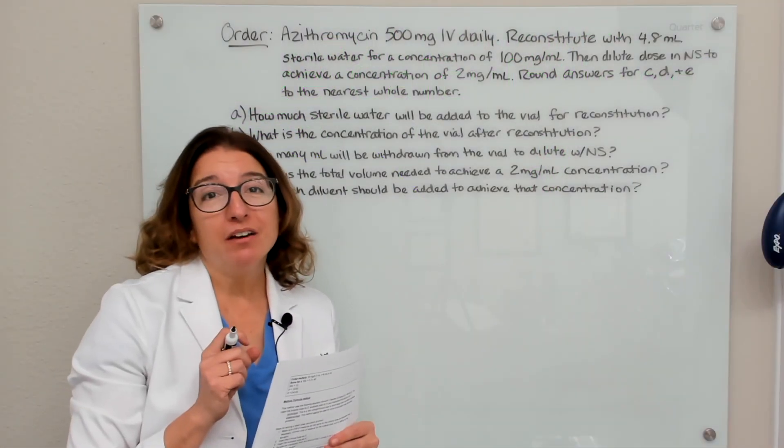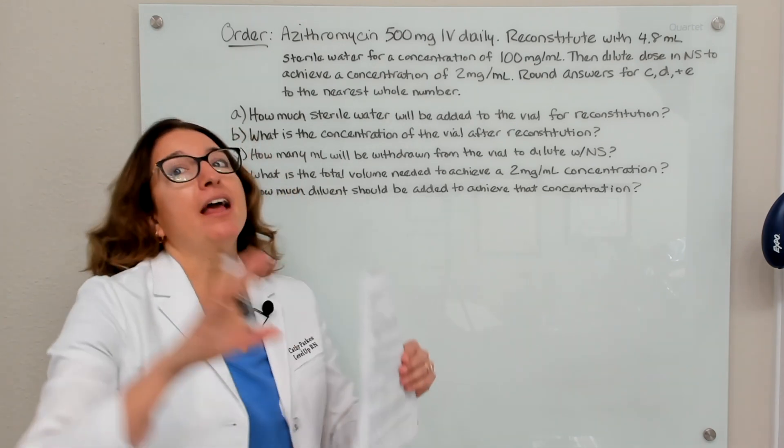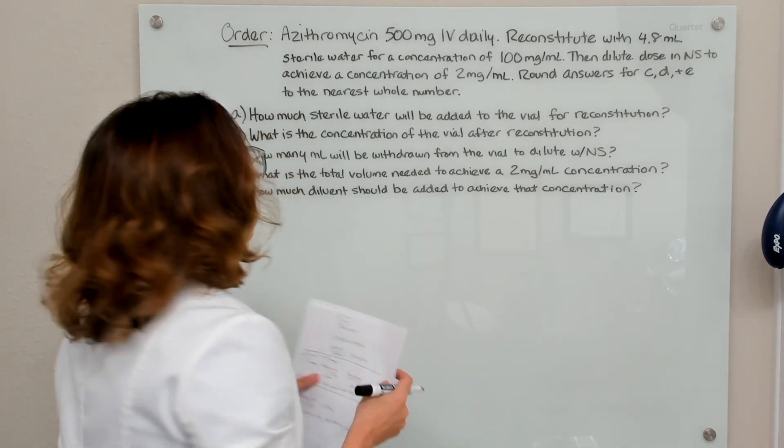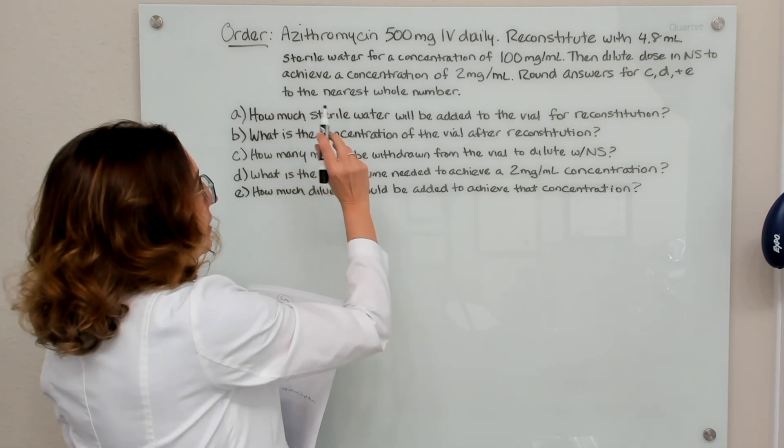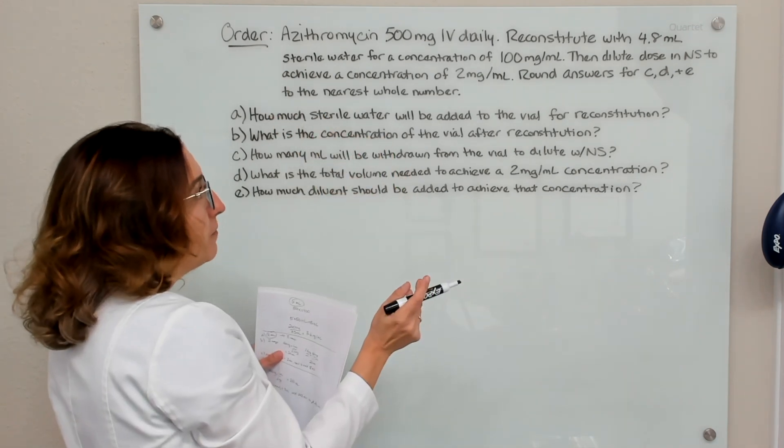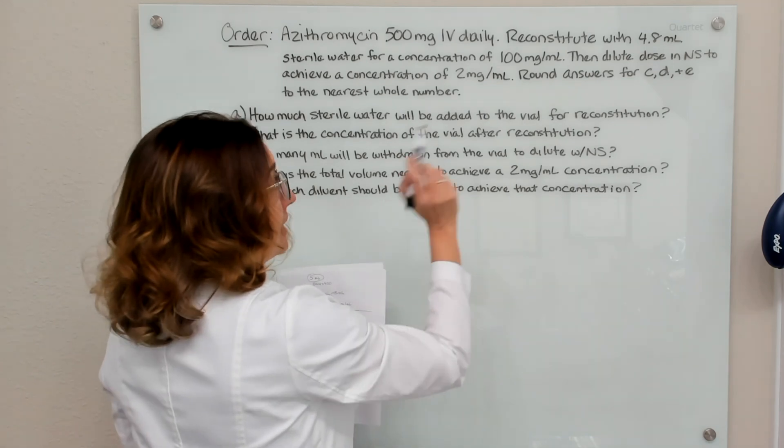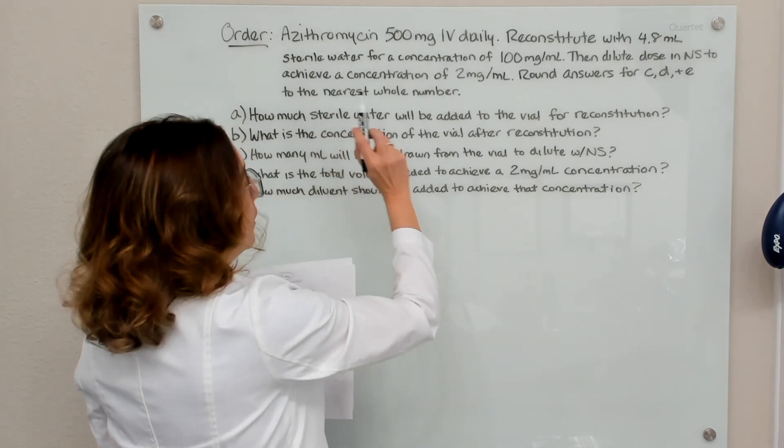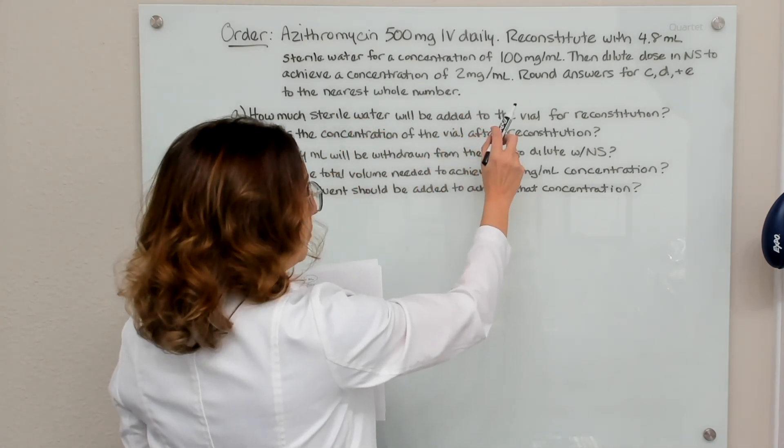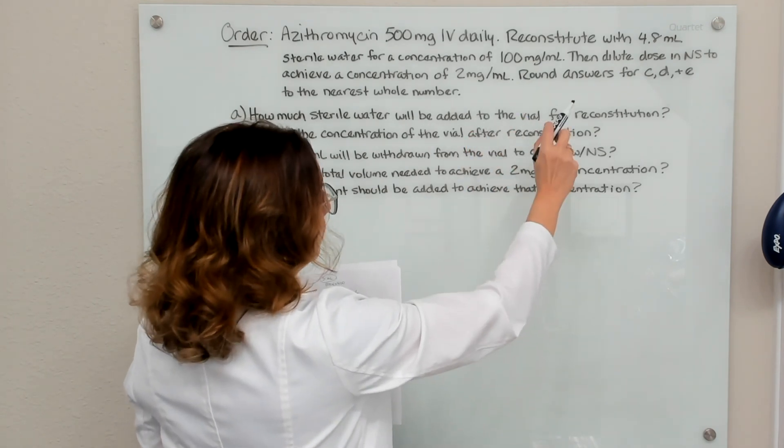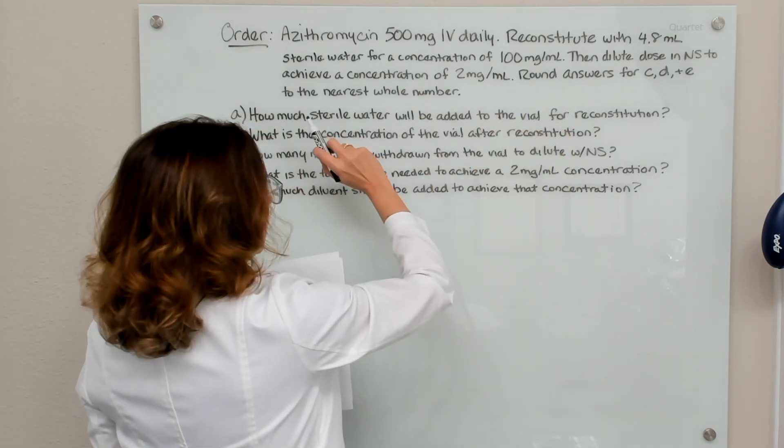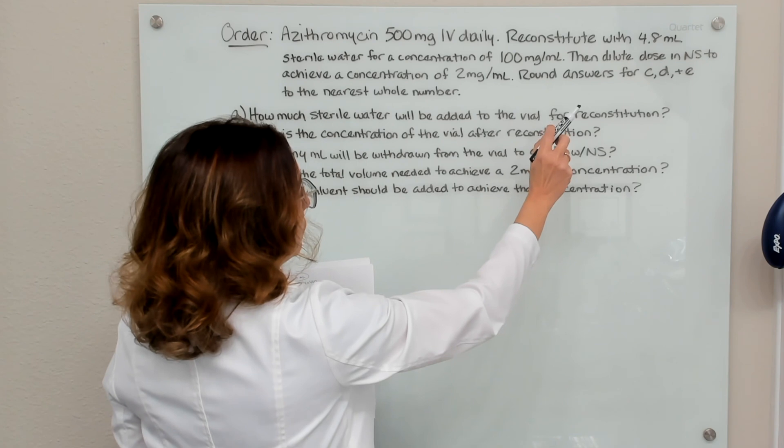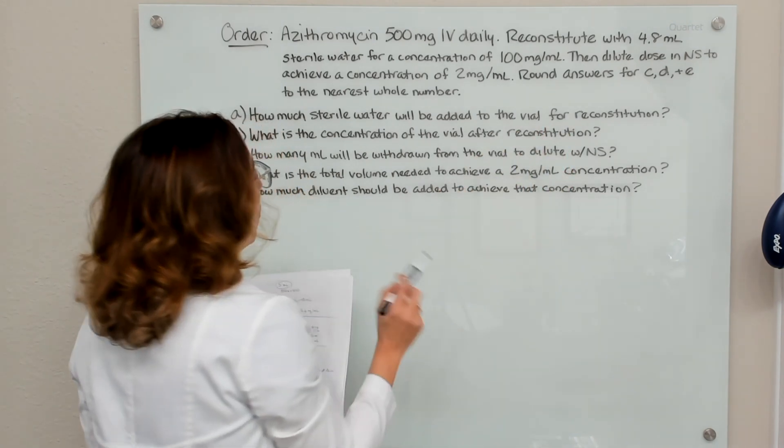All right, in this problem, we are going to reconstitute and dilute a medication. So it's kind of like the grand finale of this topic. With this order, we have azithromycin 500 milligrams IV daily ordered. Instructions state to reconstitute with 4.8 milliliters of sterile water for a concentration of 100 milligrams per milliliter. Then we need to dilute the dose in normal saline to achieve a concentration of 2 milligrams per ml. And then we need to make sure we are rounding our answers for C, D, and E to the nearest whole number.